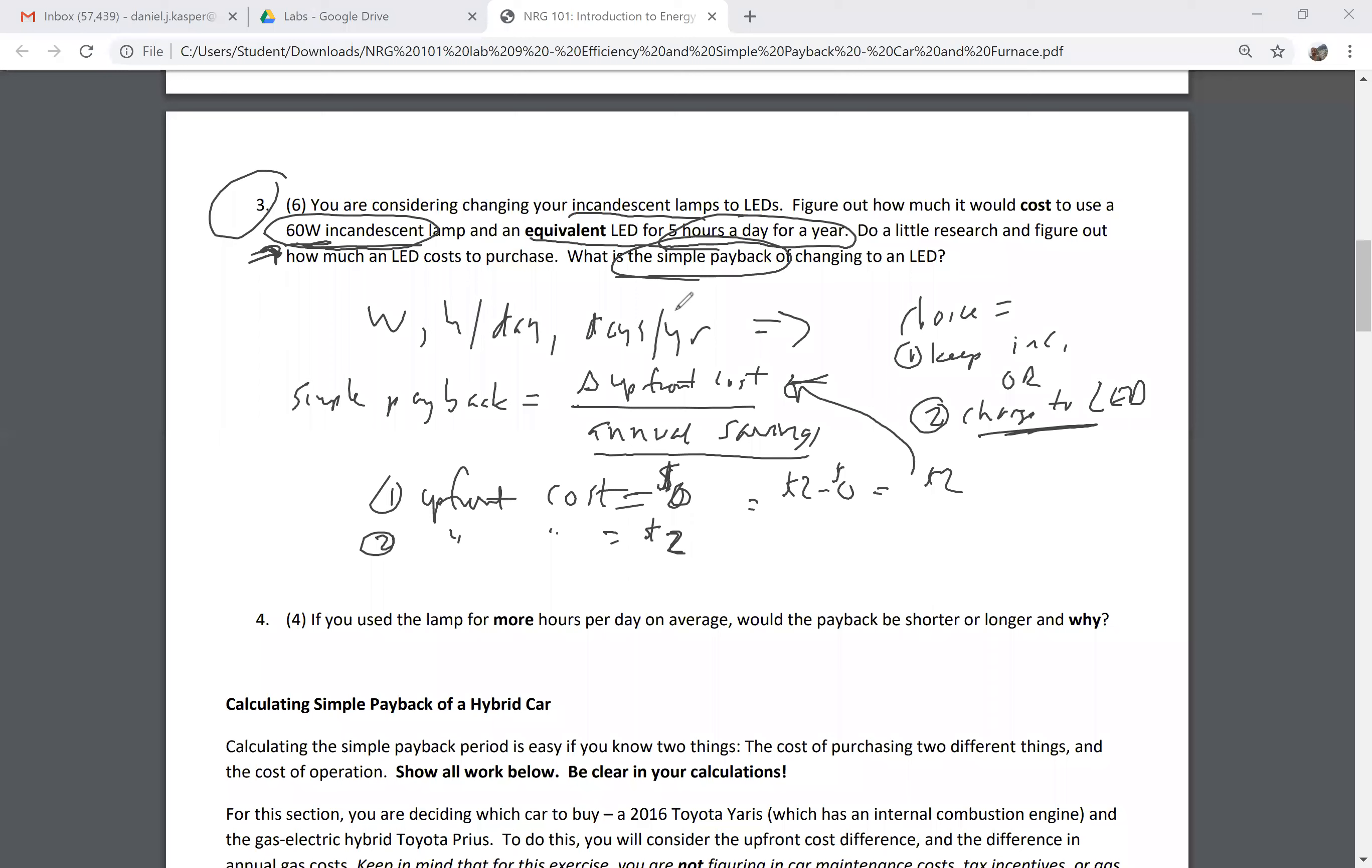Then you do the same calculation for my LED. Let's say I calculate my annual cost of my incandescent is about $16.42, and then my annual cost for my LED, the equivalent LED I found, is about $2.46 per year.